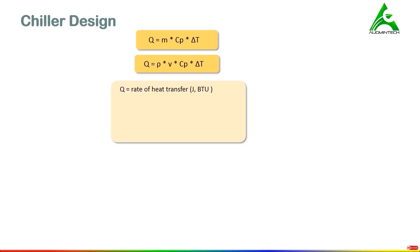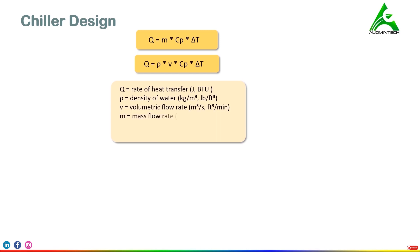Here are the details of each term used in the equation. Q is rate of heat transfer, measured in joules or British thermal unit. Rho is the density of water — in SI we use kg per meter cube, and in IP system we use pounds per feet cube. V is volumetric flow rate measured in meter cube per second or cubic feet per minute (CFM). M is mass flow rate, measured in kg per second or pounds per minute.